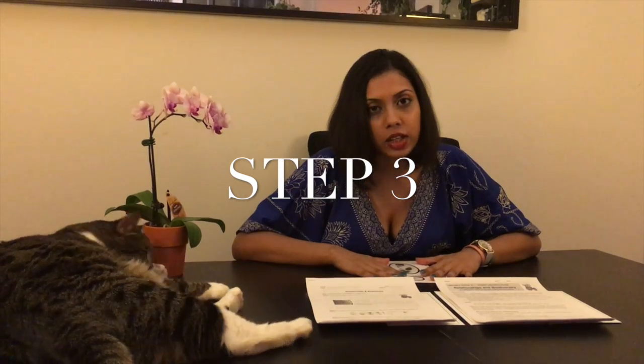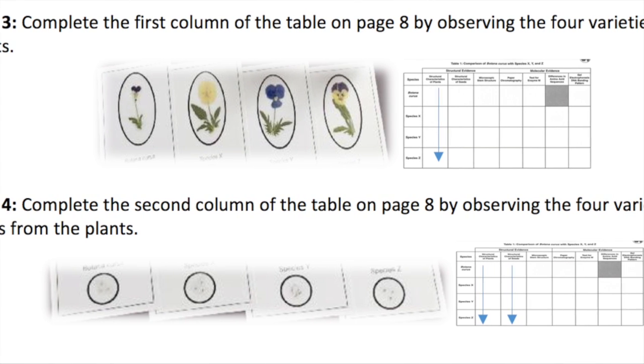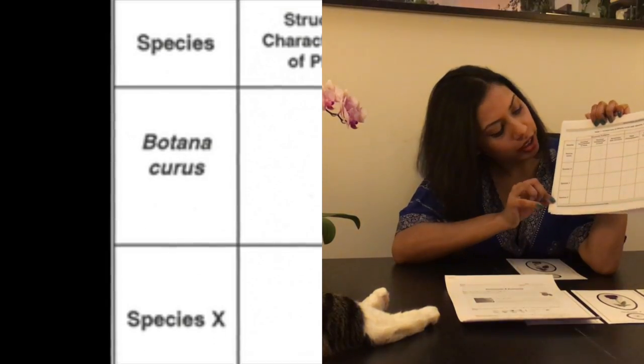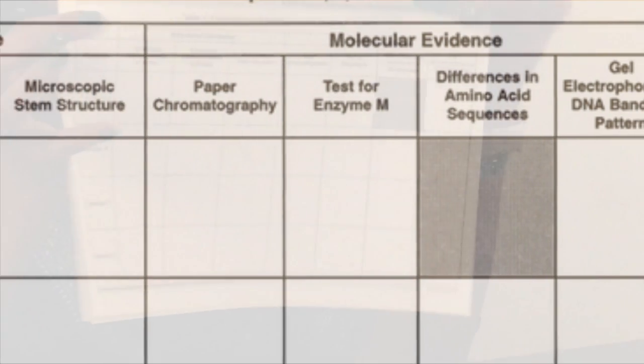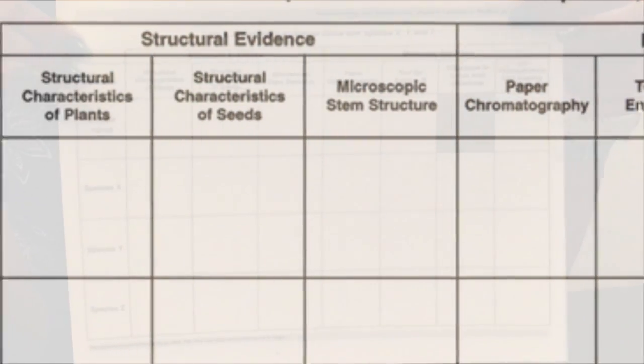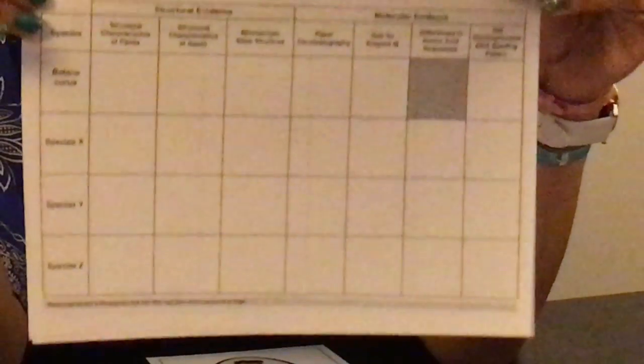Step three will begin with the most obvious comparison to show whether plant species are related, and that is the structural comparison. Students will be asked to turn to page eight of the lab, which has a chart with giant boxes. The rows indicate Botanicurus and three other similar species. The columns list all the various tests that students will have to perform to find species similar to Botanicurus.